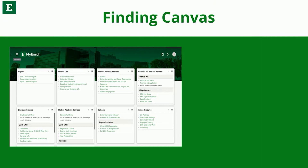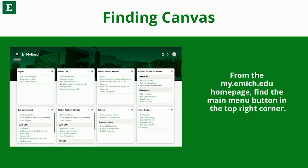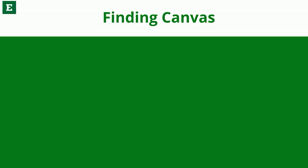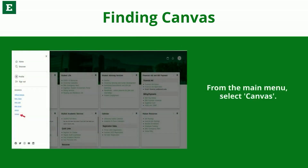First, we will explore Canvas, the digital platform where you can find your courses. Begin by logging into your my.emich account with your NetID and password. From the my.emich.edu homepage, find the main menu button in the top right corner. From the main menu, select Canvas.